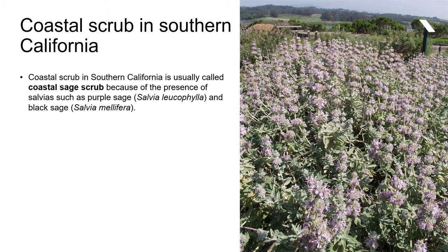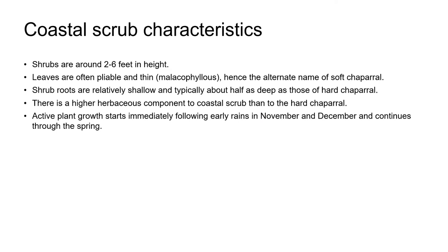In Southern California, Coastal Scrub is usually called Coastal Sage Scrub because it has a lot more salvias than in Northern California. They have Black Sage, Salvia mellifera; White Sage, Salvia apiana; and Purple Sage, Salvia leucophylla, which you can see in the photo on the right, growing at a native plant nursery in Moss Landing.